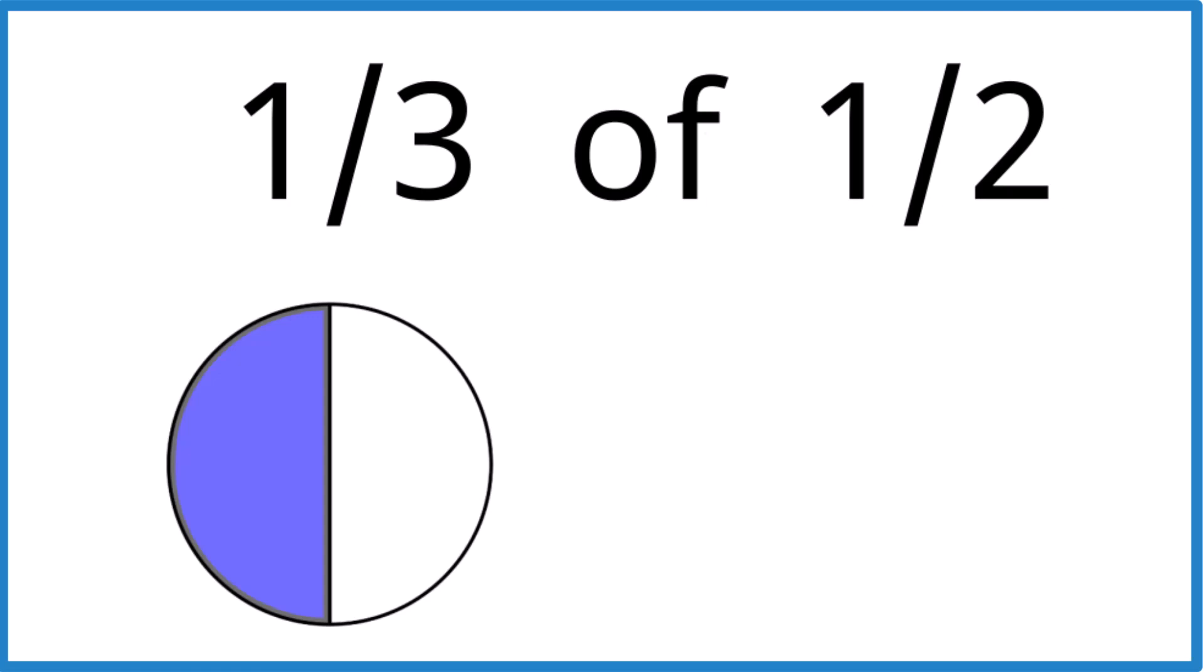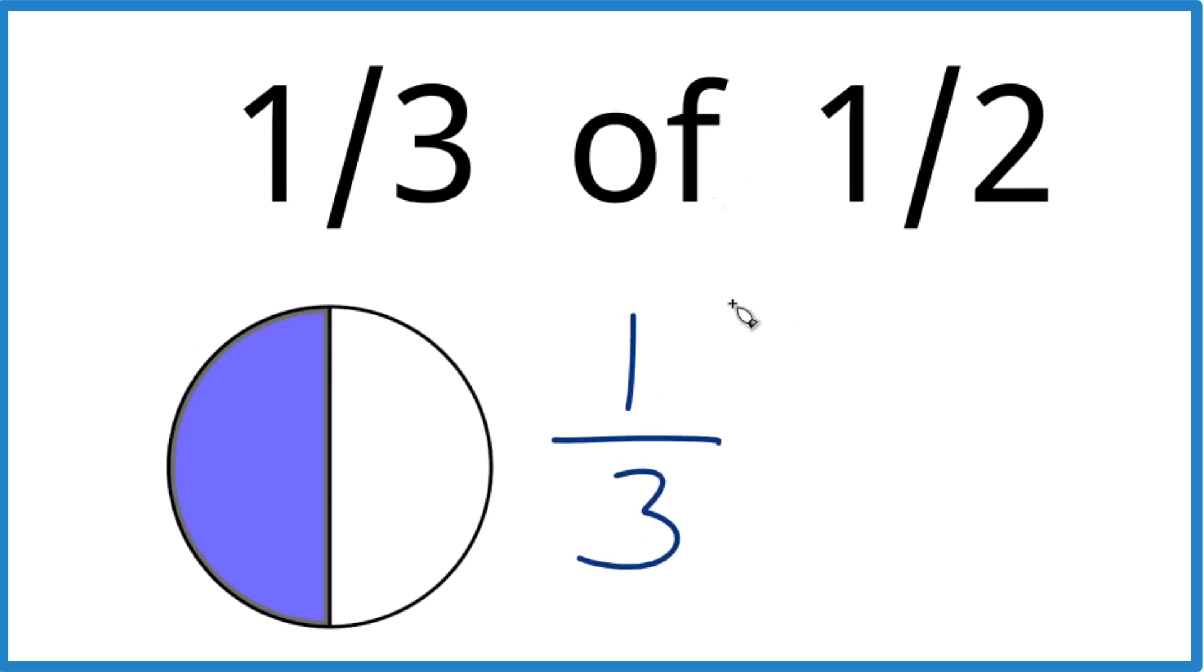We want to take one third of it. So to do this, we could just take one third, and for 'of', instead of 'of', we're going to multiply by one half.